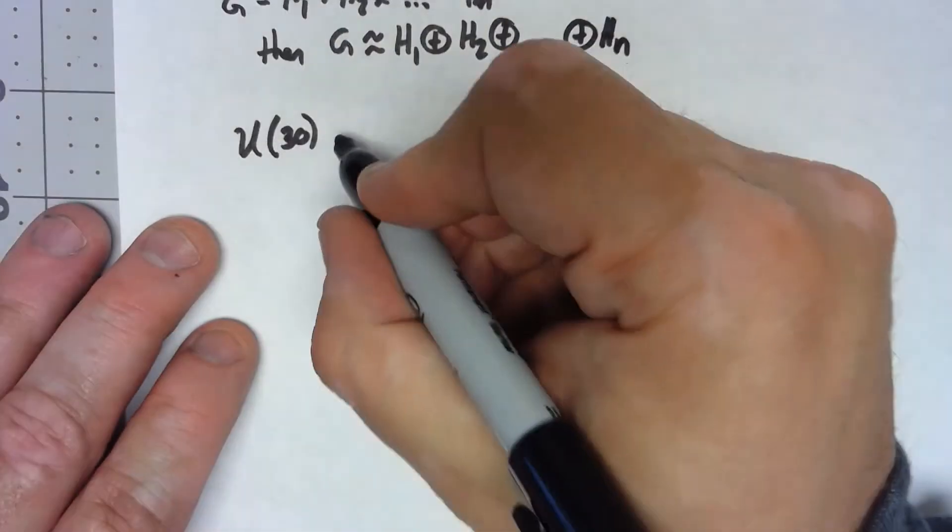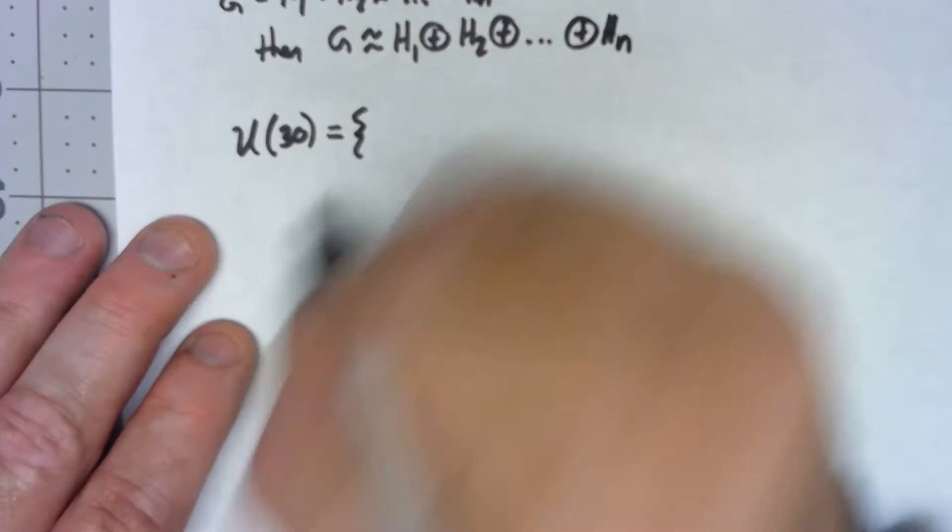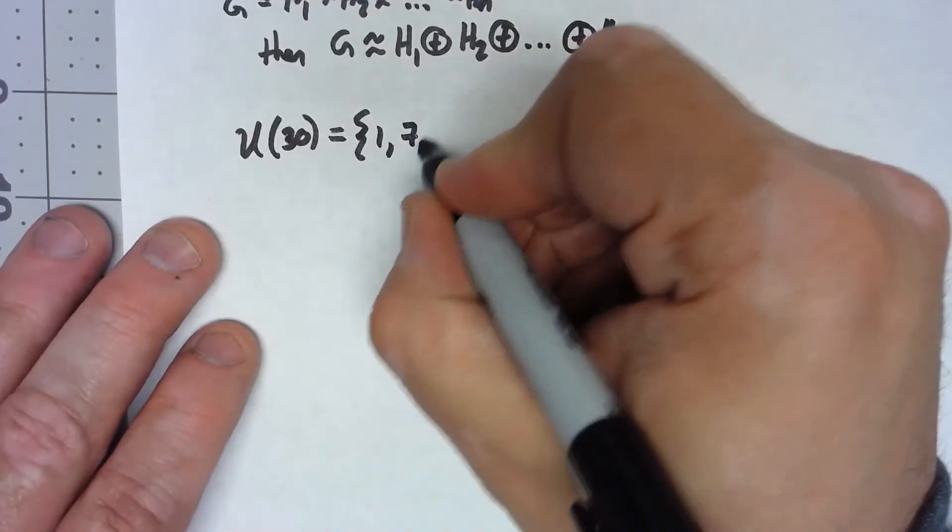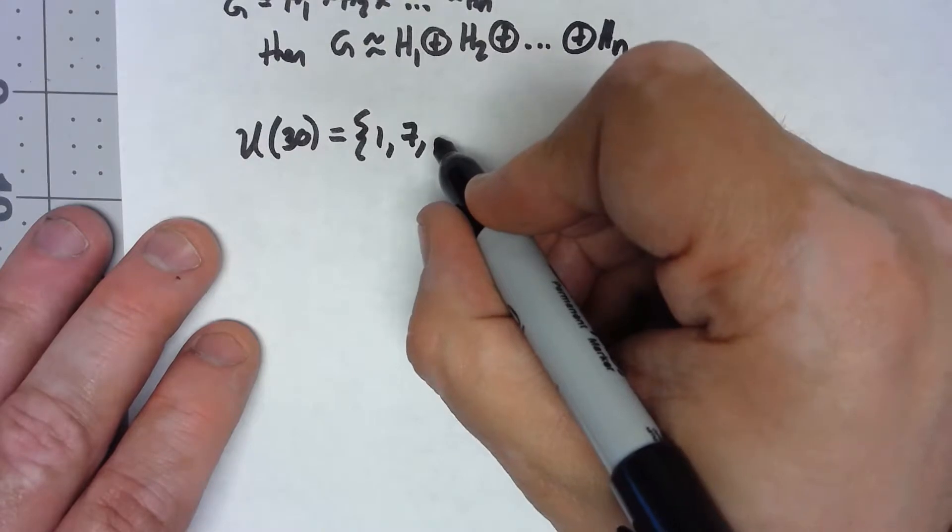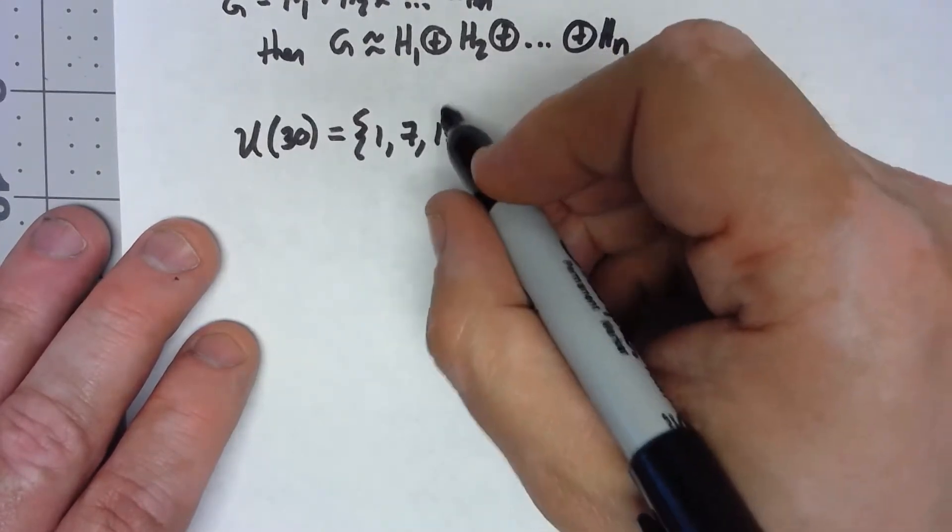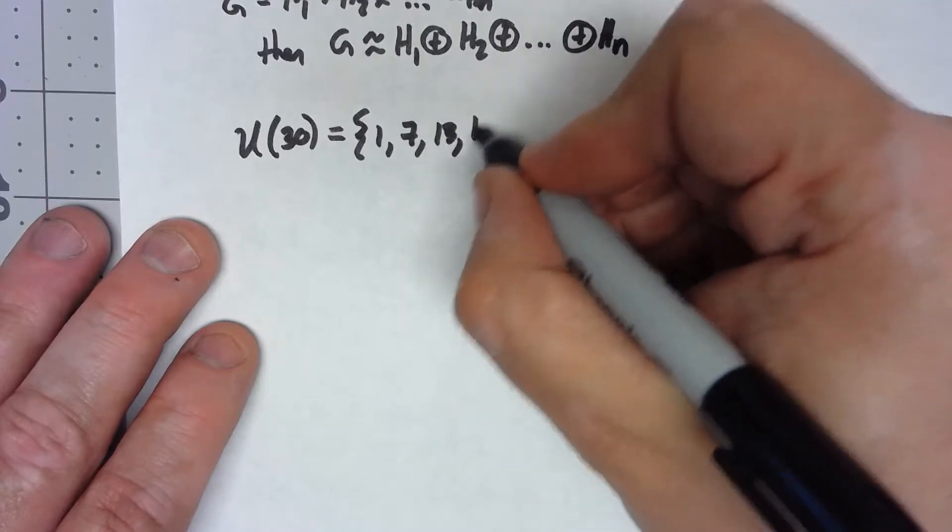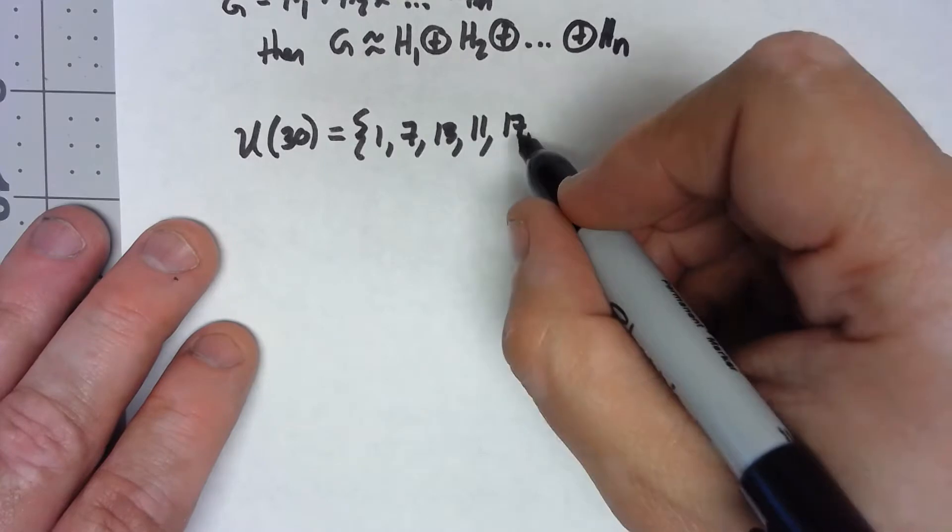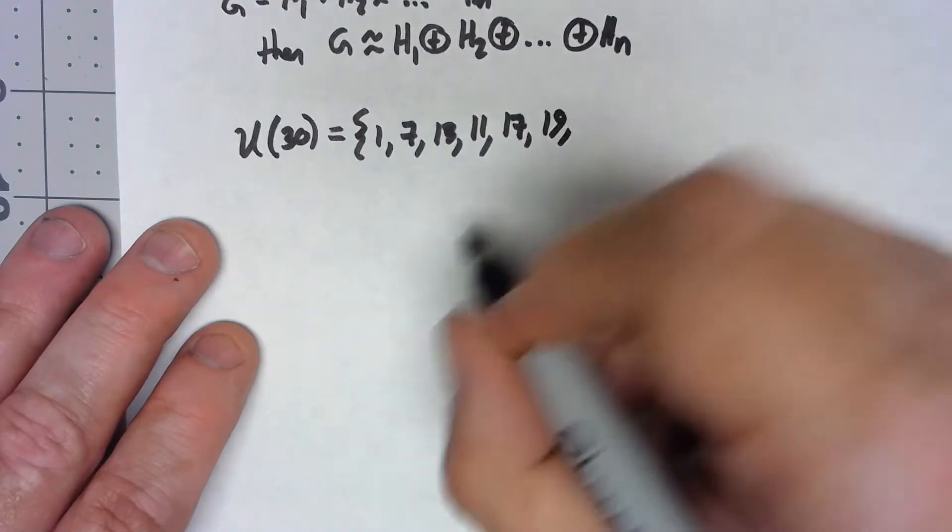Again, it would be better to look at a non-abelian example, it's just they get really hard to do. So U30 includes 1, 7, 13, I missed 11, 17, 19, 23, and 29.